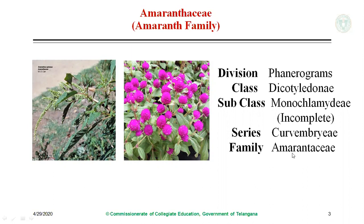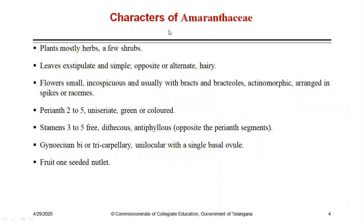The family Amaranthaceae includes popular plants such as Amaranthus viridis and Amaranthus spinosus, with different varieties, and Gomphrena. The general characters: plants are mostly herbs and a few are shrubs. Leaves are exstipulate — stipules are absent — simple, opposite or alternate, and hairy. Flowers are small, inconspicuous, and usually with bracts and bracteoles.